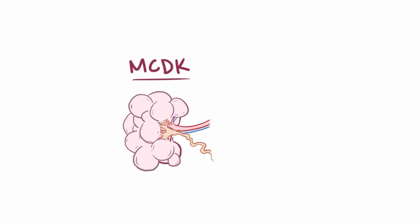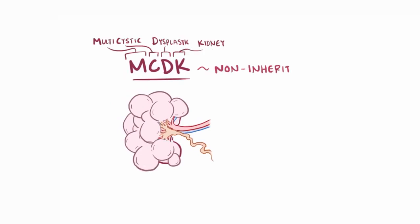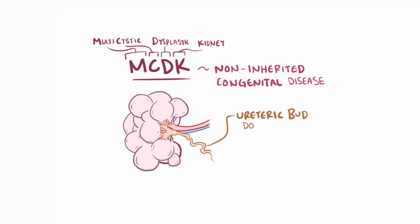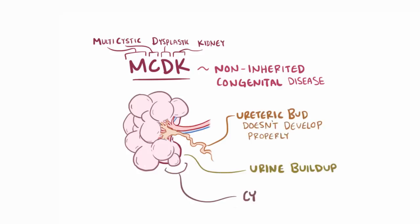As a quick recap, multicystic dysplastic kidney is a type of non-inherited congenital kidney disease where the ureteric bud fails to develop properly, resulting in a buildup of urine and formation of cysts.